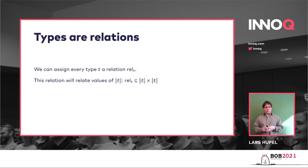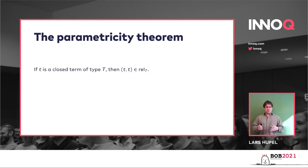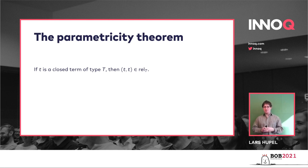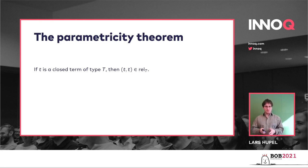Why do we define all of this? The paper by Reynolds goes into really a lot of detail, but Reynolds proved a theorem called the Parametricity Theorem. It says that if you have any term — using some form of lambda calculus, or we can think of Haskell types — if T is some closed Haskell type that cannot reference any unbound variables, then this value T is related to itself.